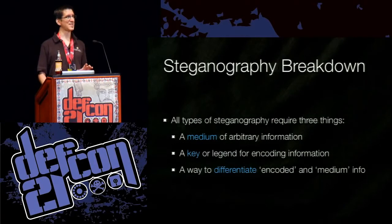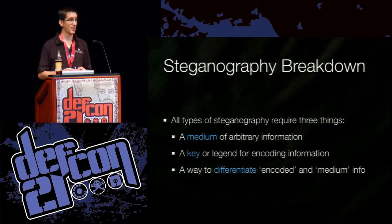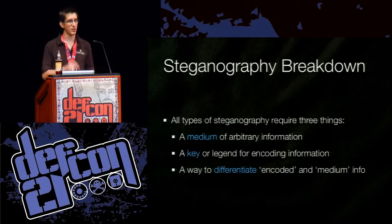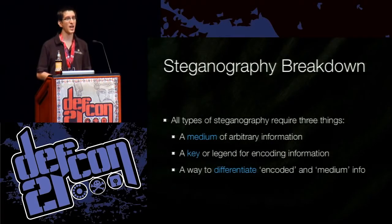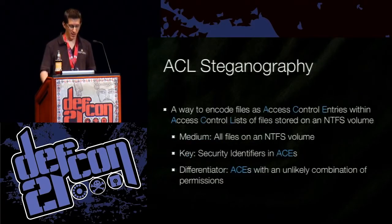All the steganographic techniques we've talked about have three things in common. Number one, you need a medium of arbitrary information — it could be your scalp, a tapestry, or a photograph. Number two, you need a key or legend — a way to encode data so that encoding one way means one thing and another way means something else. And finally, you need a way to differentiate between encoded information and the rest of the medium information that is expected to be there. These three things make up steganography. With that, let's talk about ACL steganography, the scheme that I developed.